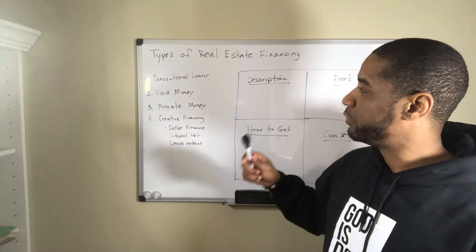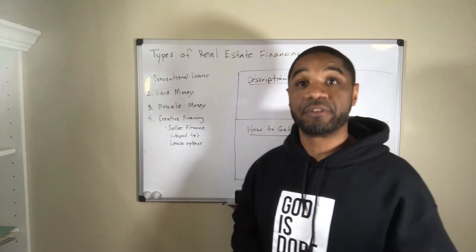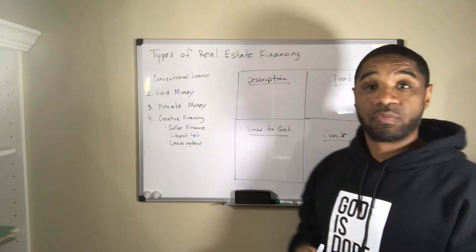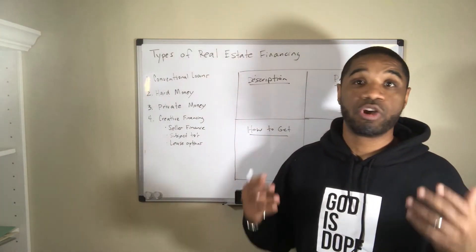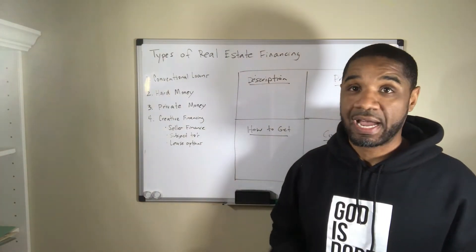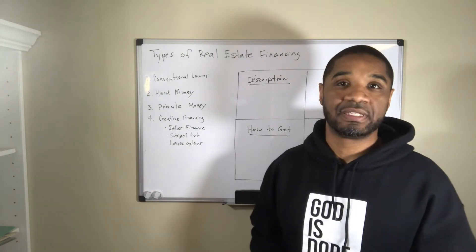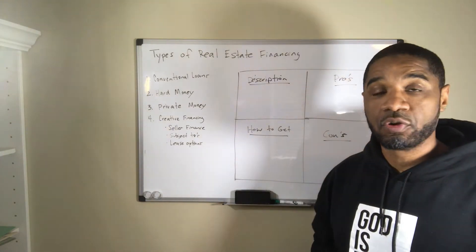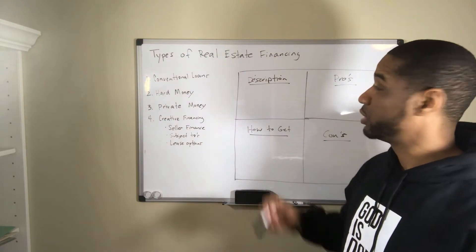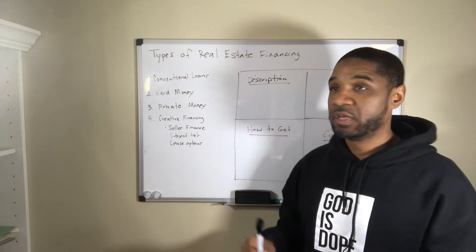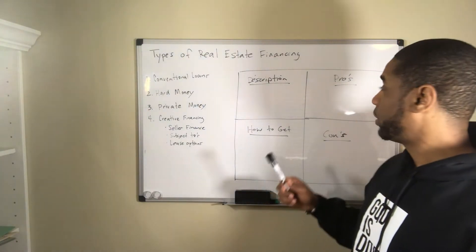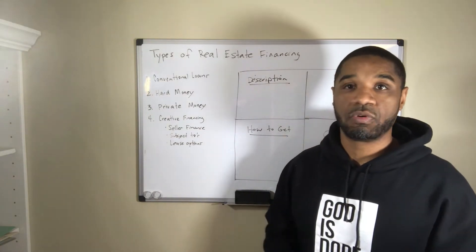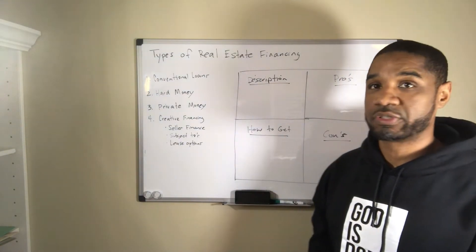When you go to get a deal, one of the biggest questions I get is: where do I get the money, how do I find money, how do I finance my deals? So I want to give you a basic overview of what the four major types are — a basic description, how do you get it, the pros and cons of each method — and we'll walk our way through.